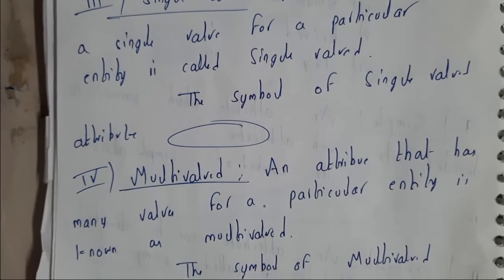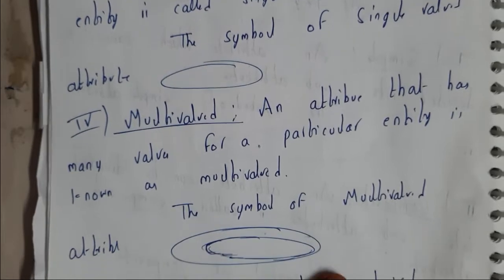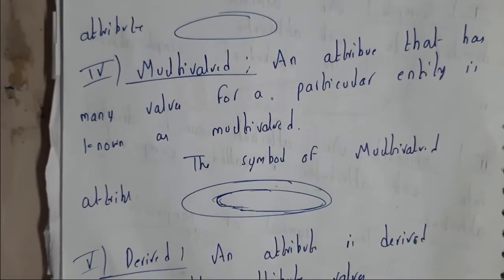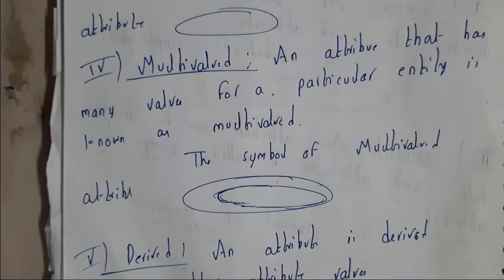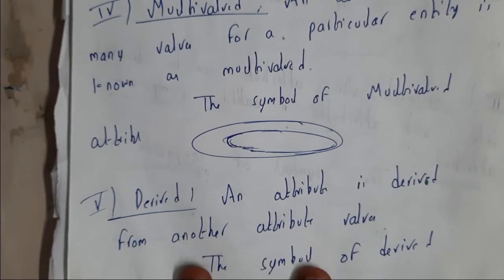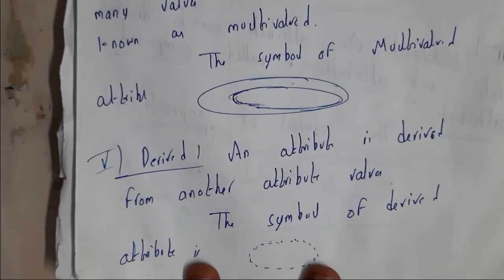A multi-valued attribute is an attribute that has many values for a particular entry. The symbol for multi-valued attribute is a double oval. Note that simple attribute and single-valued attribute share the same symbol.